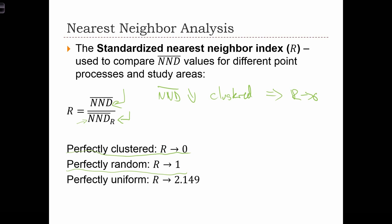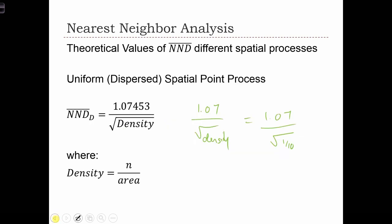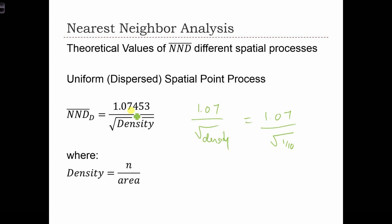If the data are uniform, then the nearest neighbor distance is actually larger. In the random case, the nearest neighbor distance is 1 over 2 root density, while in the uniform case it's 1.07 divided by root density. Clearly, this is much larger.